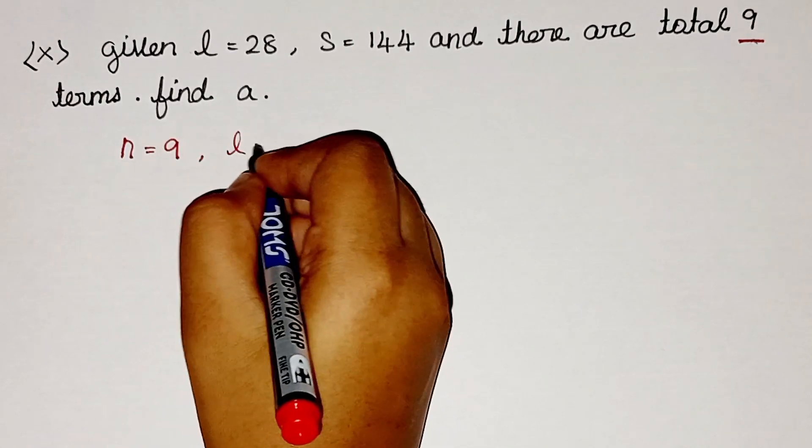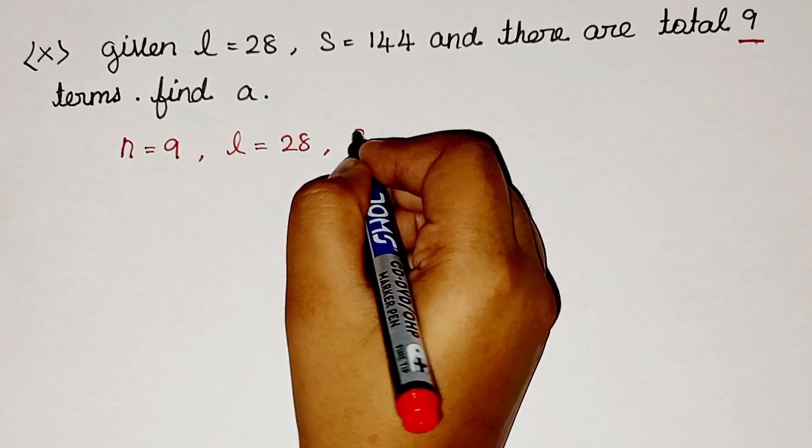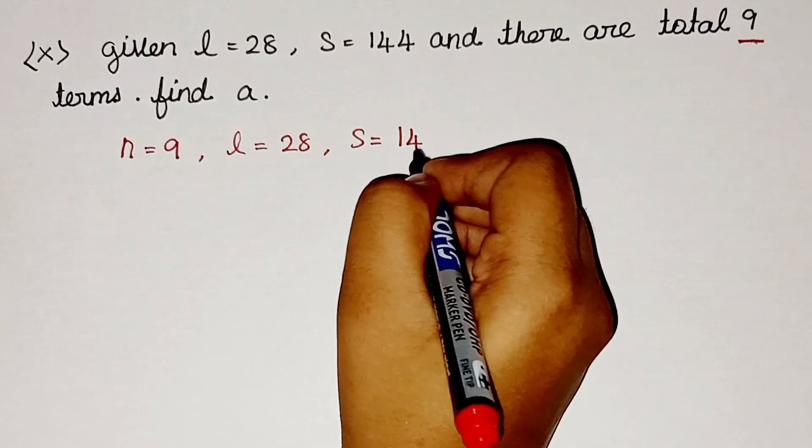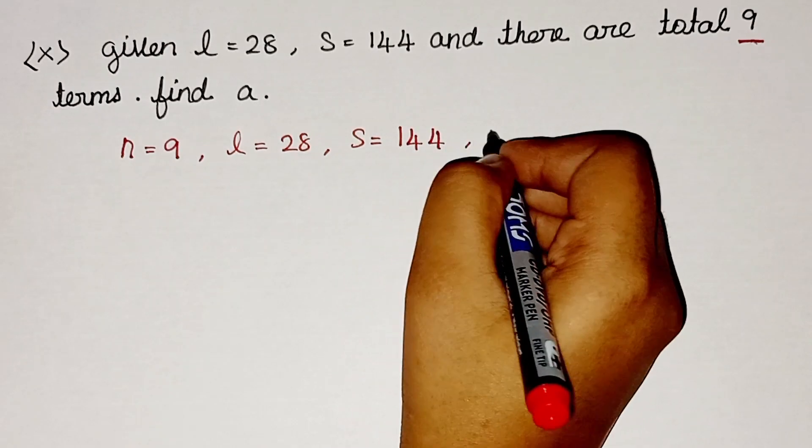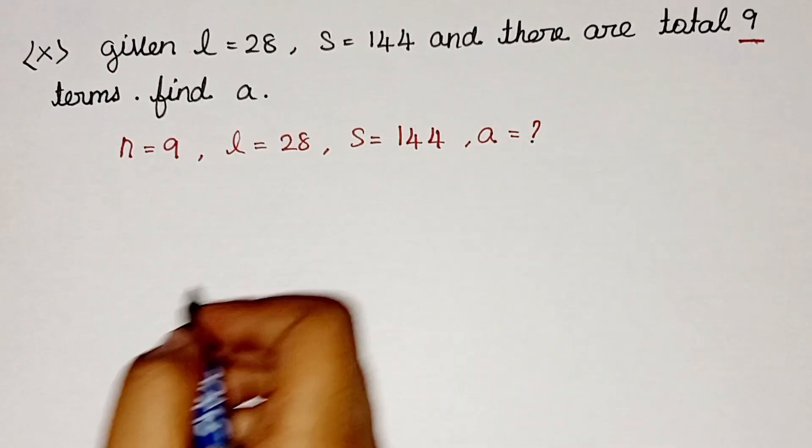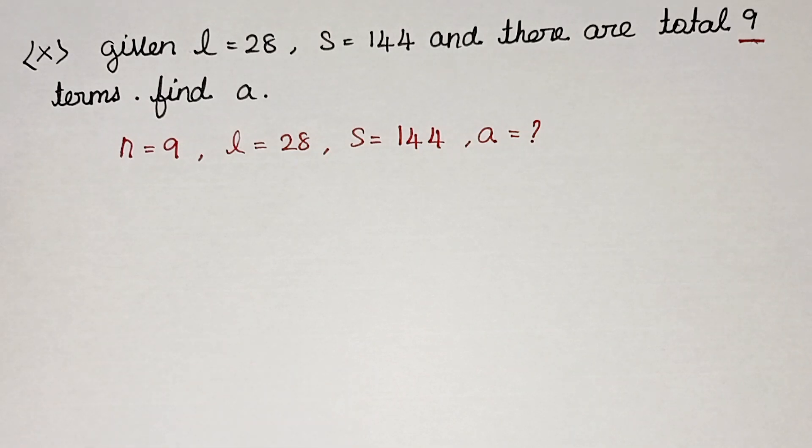So we have L value is 28 and S value is 144. We have to find the a value which is the question mark. So now let us apply the Sn formula.